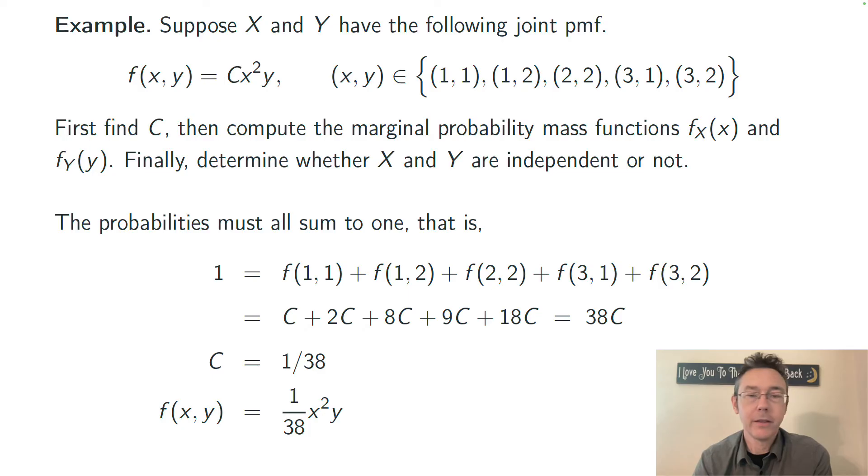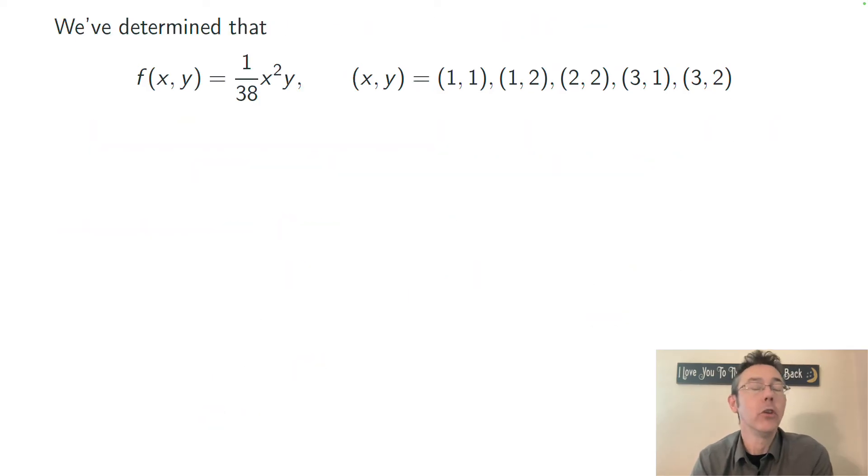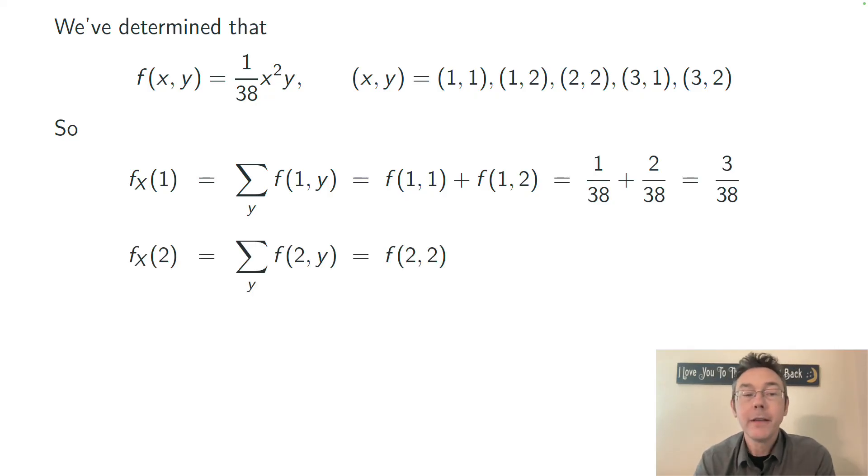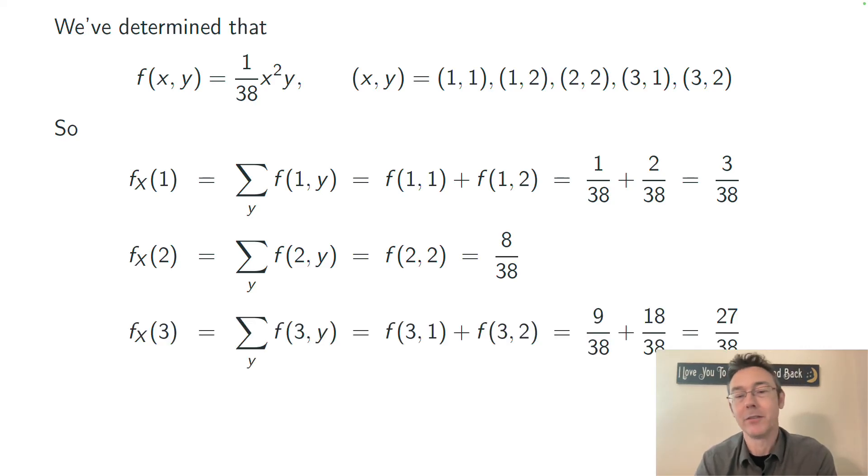Let's get these marginal probability mass functions using this joint probability mass function. First we'll do X and we'll just compute the different marginal probabilities. So f_X(1), what's the probability that x equals 1? We add up all of the different probability masses for when x is 1, and that means (1,1) and (1,2). And when we do that, we get 3/38. Similarly, f_X(2) is 8/38, and f_X(3) is going to be 27/38. And you can notice that those all add up to 1. That's just a quick check on the arithmetic here. If we don't get 1, we know we made a mistake somewhere.